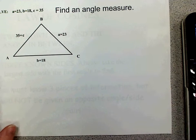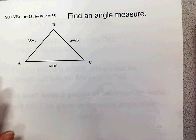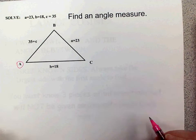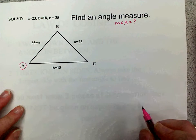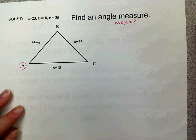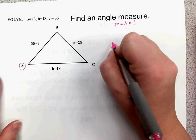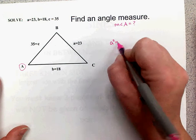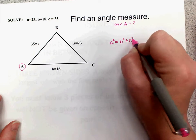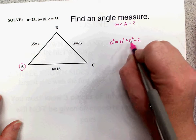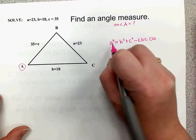Now let's look at the second example, where we're finding an angle measure. I'll solve for angle A. Since I want one of the A values, I'll use the form where the A's are on the outside: a squared equals b squared plus c squared minus two times b times c times cosine of angle A.